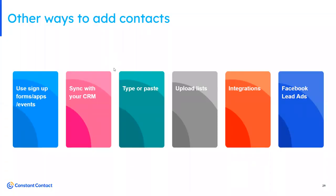There are lots of ways to add contacts. We have the list builder app — found on the app store, downloadable to your phone — so if you're out and about, you can ask someone for their contact information or even scan a business card. Constant Contact also has an open API so you can sync with your CRM. You can type and paste contacts, or most people upload from a file or spreadsheet. We also have integrations with Gmail, Donor Perfect for those using that donor platform as your CRM, and you can bring in leads from social media directly into Constant Contact.